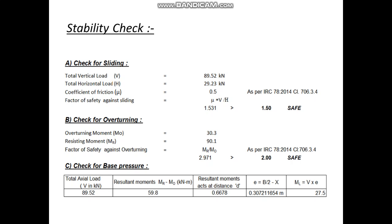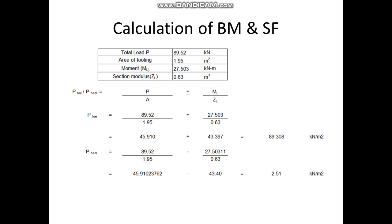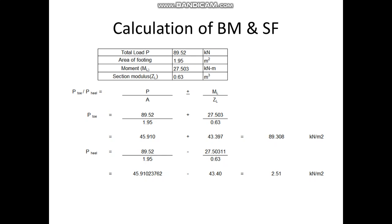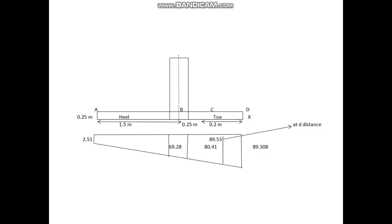The base pressure is calculated as p/A ± M/Z. Here p is 89.5 kN, the area A is 1.95 × 1 m², the moment M is 27.5 kN·m, and the section modulus Z is b·d²/6, where b is 1 and d is 1.95, giving Z equal to 0.63 m³. The two base pressures are calculated as 89.3 kN/m² and 2 kN/m². The higher pressure of 89.3 kN/m² is at the toe side, as the heel side carries the soil self weight and overburden, making the toe pressure more critical.